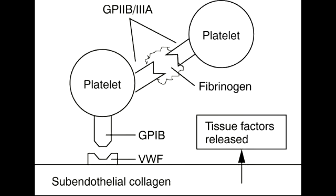In von Willebrand's disease, there is a defect in the platelet plug formation due to a decrease in von Willebrand factor. This decrease leads to a defect in platelet to von Willebrand factor adhesion, meaning platelets will not be able to adhere to the damaged endothelium, therefore leading to a bleeding disorder.